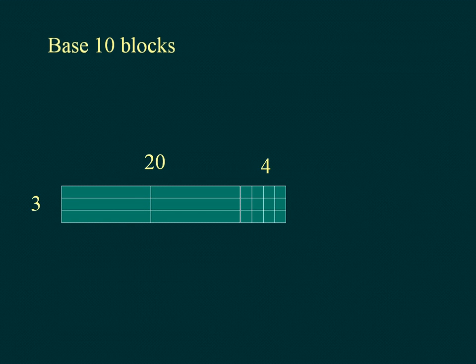The array represents 4 ones multiplied by 3 ones and 2 tens multiplied by 3 ones. Each of these is part of the product, the result of the multiplication.